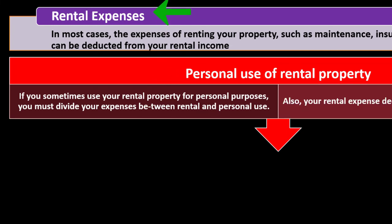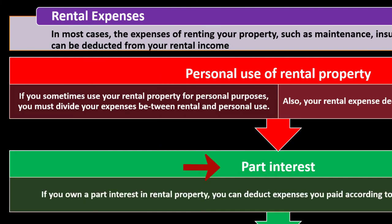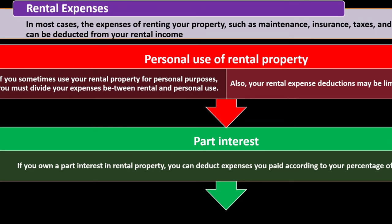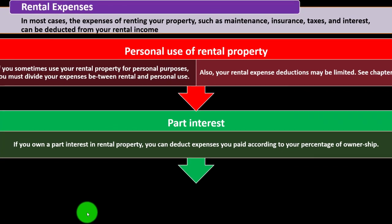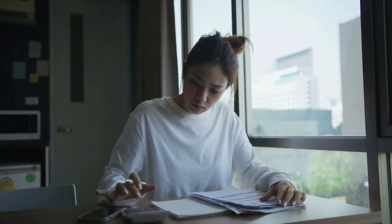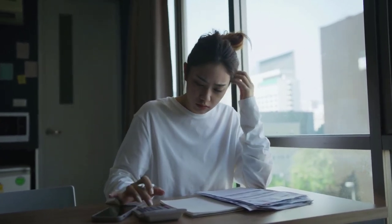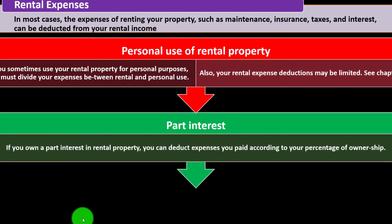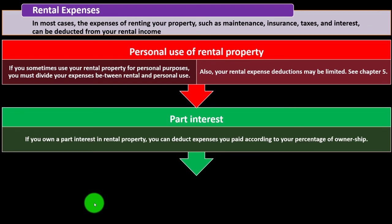Part interest deductions: if you own a part interest in rental property, you can deduct expenses you paid according to your percentage of ownership. Generally, you'd figure the rental income minus expenses, then divide the net among the owners — each owner recognizing income and receiving their percentage of expense allocation.